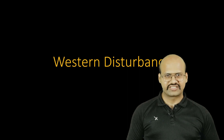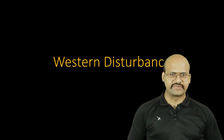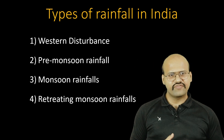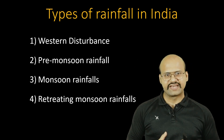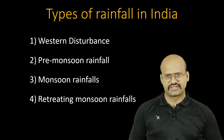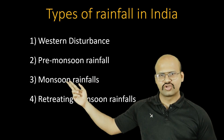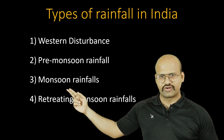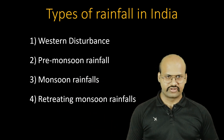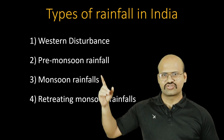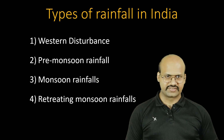Hello friends, welcome to Zeta Access. Today we will discuss western disturbances. Rainfall in India occurs through different mechanisms: the first is western disturbance, then pre-monsoon rainfall, monsoon rainfall, and retreating monsoon rainfall. Today we are going to discuss only about western disturbance.